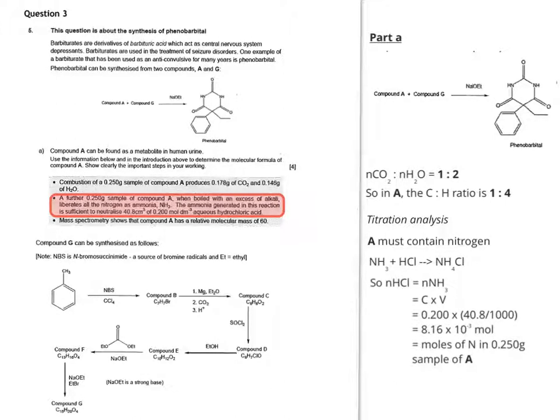Working it through, we get 8.16 times 10 to the minus 3 moles of ammonia because it's the same number of moles as HCl. Because there's one nitrogen in every ammonia molecule, that'll be one mole of nitrogen atoms in every mole of ammonia molecules. So we can also assume that 8.16 times 10 to the minus 3 is the moles of nitrogen in 0.250 grams sample of A.